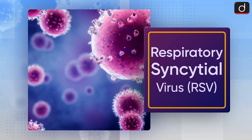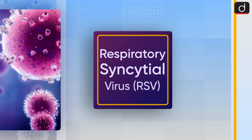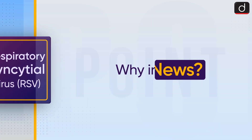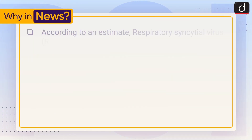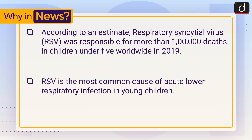Welcome to the Drishti IAS 'To the Point' program. Our today's topic is Respiratory Syncytial Virus, or RSV. First of all, we'll see why this is in news. According to an estimate, RSV was responsible for more than 100,000 deaths in children under five worldwide in 2019. RSV is the most common cause of acute lower respiratory infection in young children.